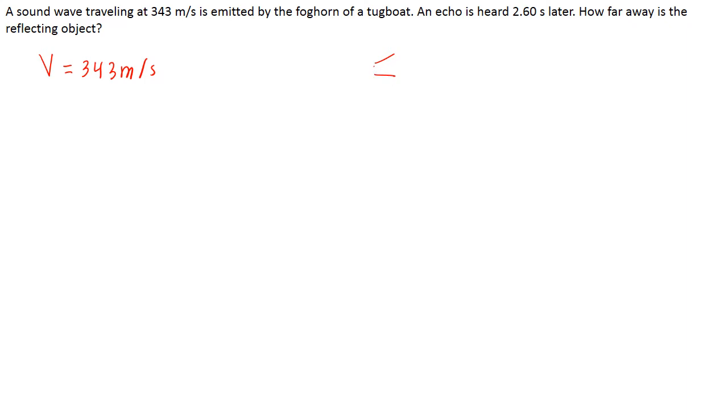...the horn to the object, it traveled and it came back in a time of 2.6 seconds. So this is like the period, it's 2.6 seconds. How far away is the reflecting object? So we have to find d.